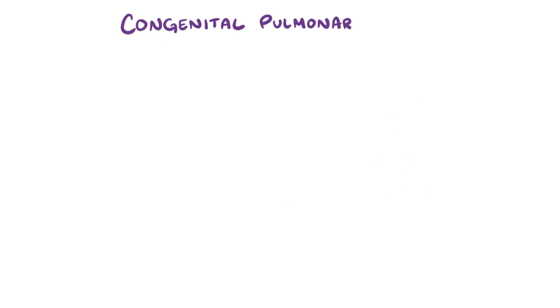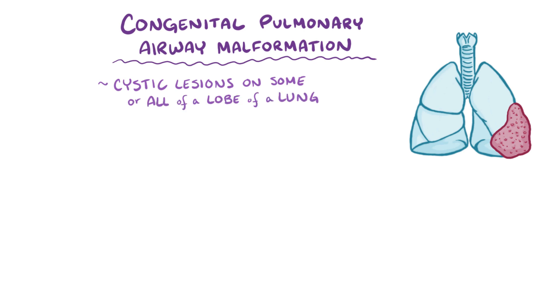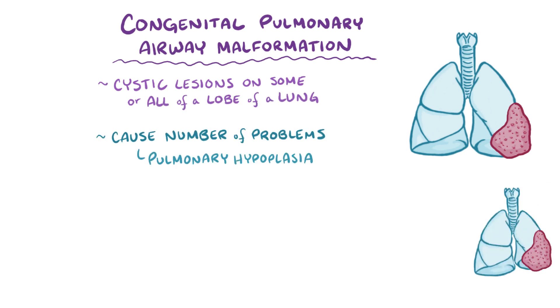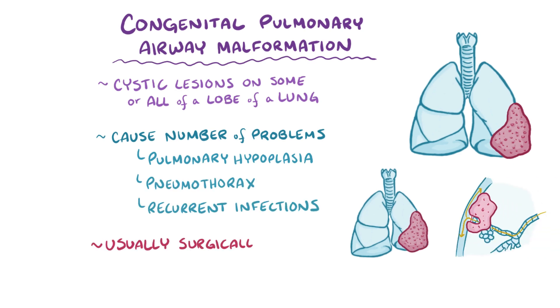As a quick recap, congenital pulmonary airway malformations are cystic lesions that occupy some or all of a lobe of a lung. They can cause a number of problems like pulmonary hypoplasia, pneumothorax, and recurrent infections, so they're usually surgically removed.